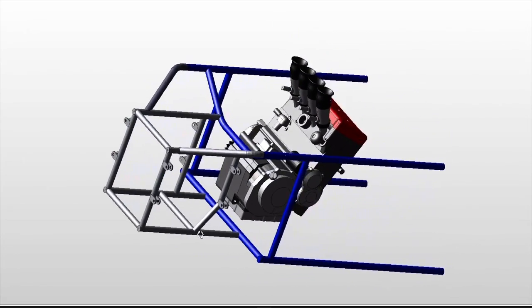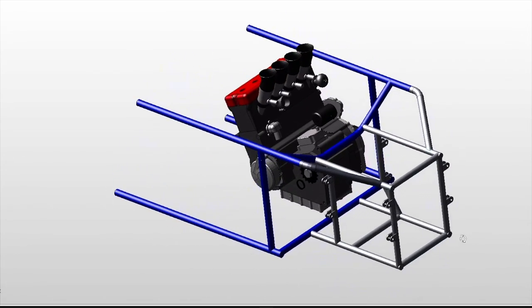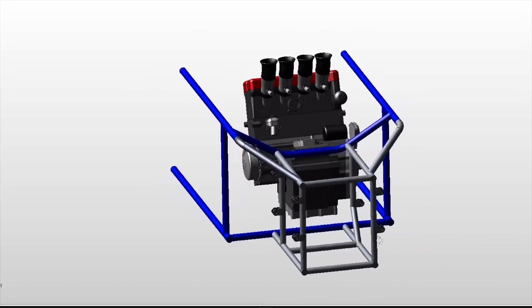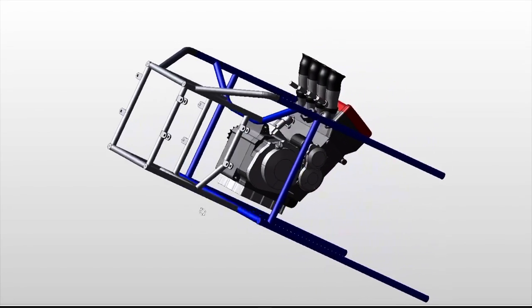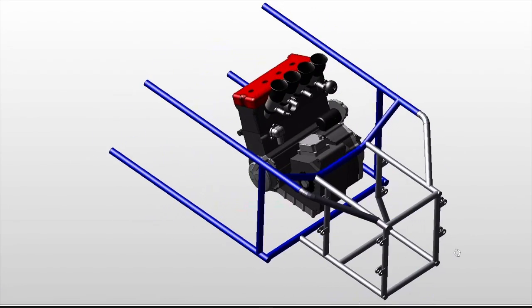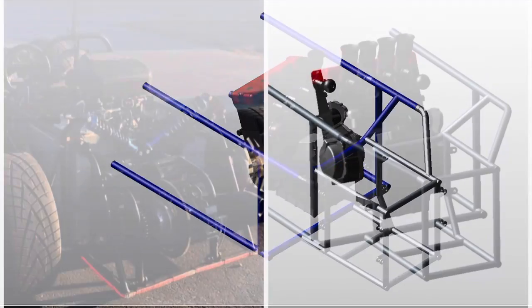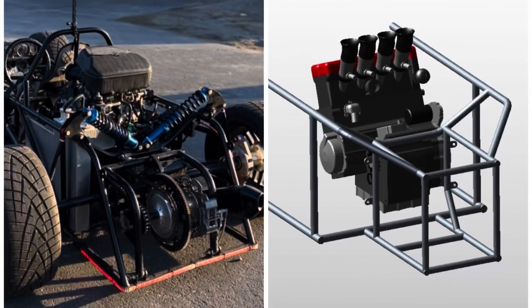So what you're looking at here is the Beetle's revised chassis. The tubes that are colored blue are part of the existing chassis and all the gray tubes are the new ones. Here's a bit of a side-by-side comparison, how it looks now versus how it'll look when it's done.